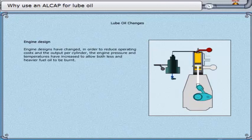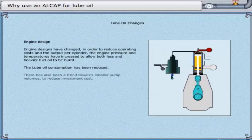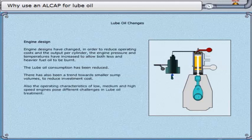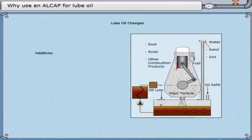The aromaticity of fuels has increased. Engine designs have changed in order to reduce operating costs and output per cylinder. The engine pressure and temperatures have increased to allow both less and heavier fuel oil to be burnt. The lube oil consumption has been reduced, and there has also been a trend towards smaller sump volumes to reduce investment cost. The operating characteristics of low, medium, and high-speed engines pose different challenges in lube oil treatment.